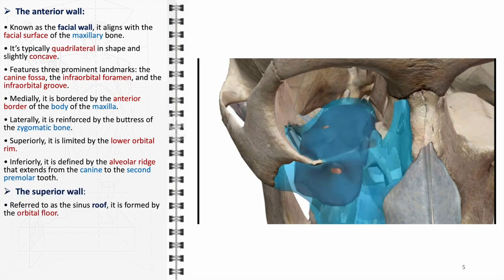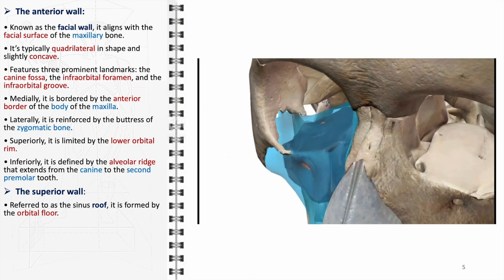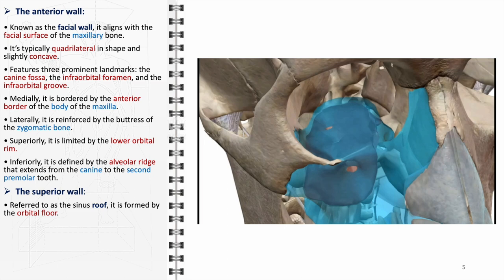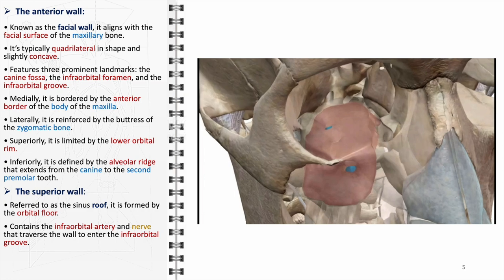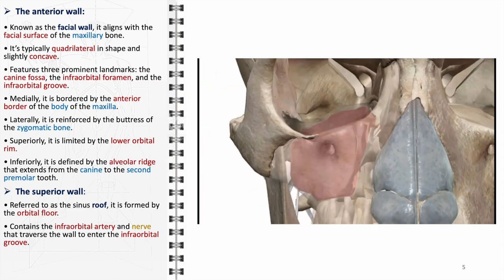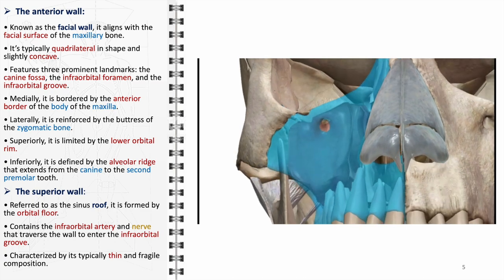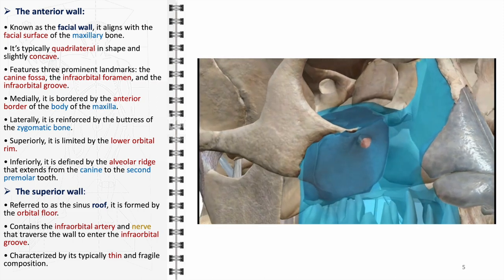The superior wall, or the sinus roof, is equally significant. It is formed by the orbital floor, making it a critical area in both sinus and orbital pathologies. This wall contains the infraorbital artery and nerve, which traverse it to enter the infraorbital groove. The presence of these structures makes the superior wall an important consideration in surgeries involving the sinus or the orbit. Additionally, the wall is typically thin and fragile, underscoring the need for careful surgical planning to avoid complications such as orbital injury.